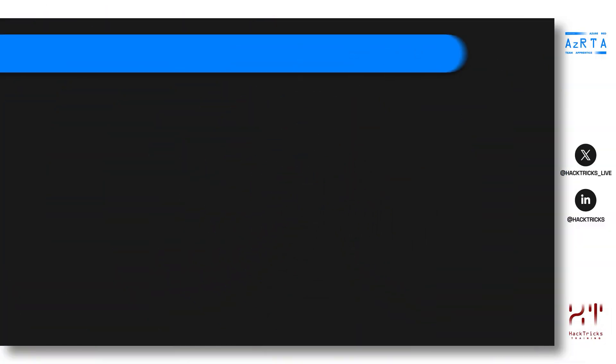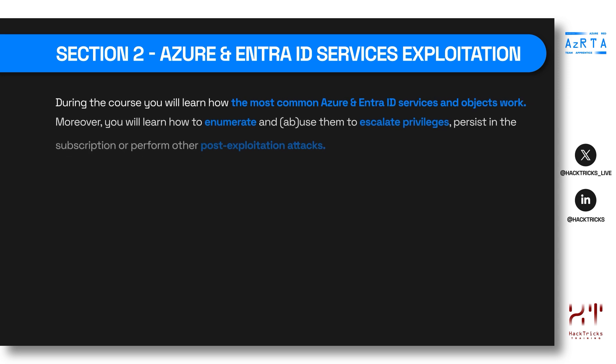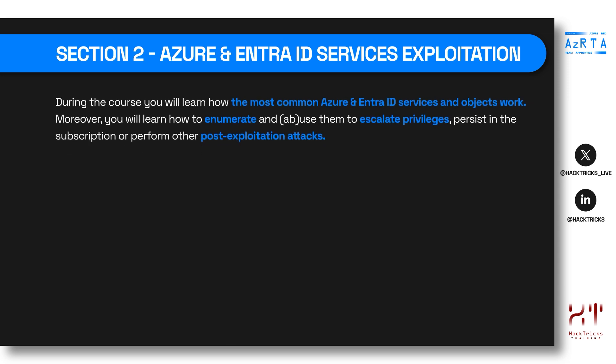The second section is Azure and Entra ID Services Exploitation. During this section, you will learn how the most common Azure and Entra ID services and objects work. Moreover, you will learn how to enumerate and use or abuse them to escalate privileges, persist in the subscription, or perform other post-exploitation attacks. We are going to be focusing on the most common Azure and Entra ID services, explaining them, and explaining how to attack them, because a real security expert in Azure needs to understand how its services could be attacked.